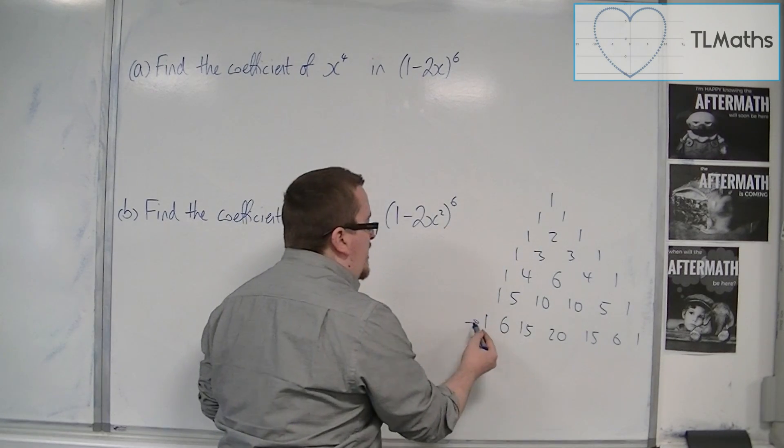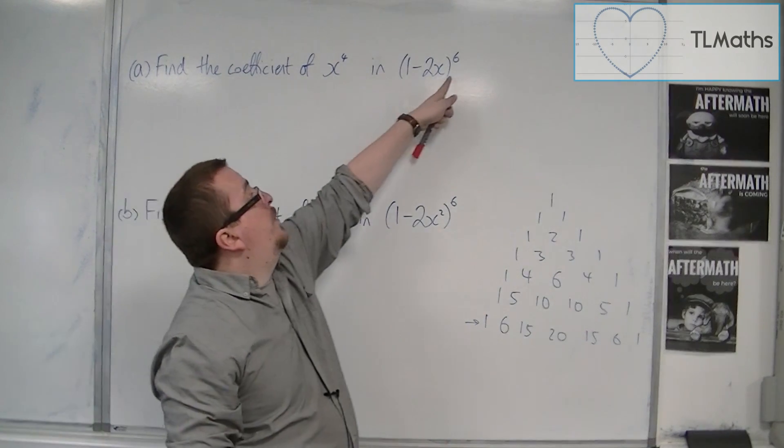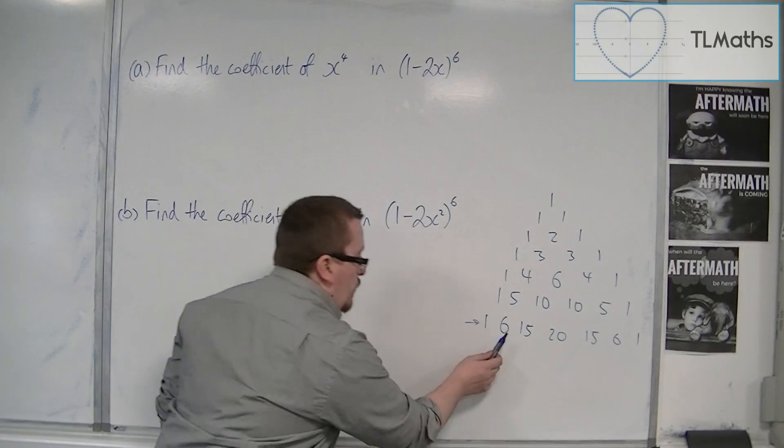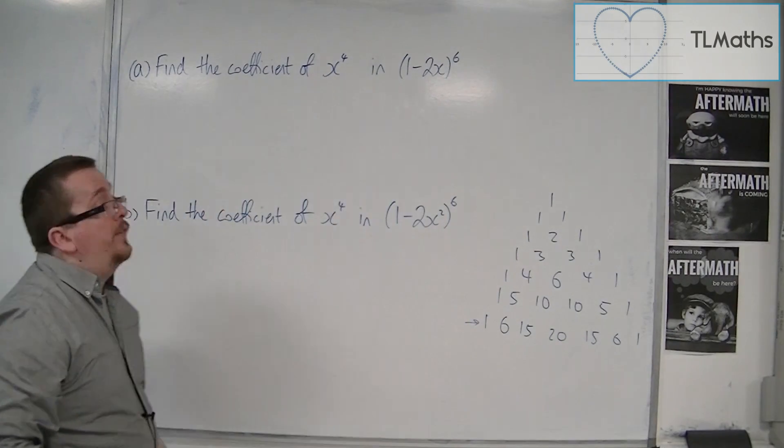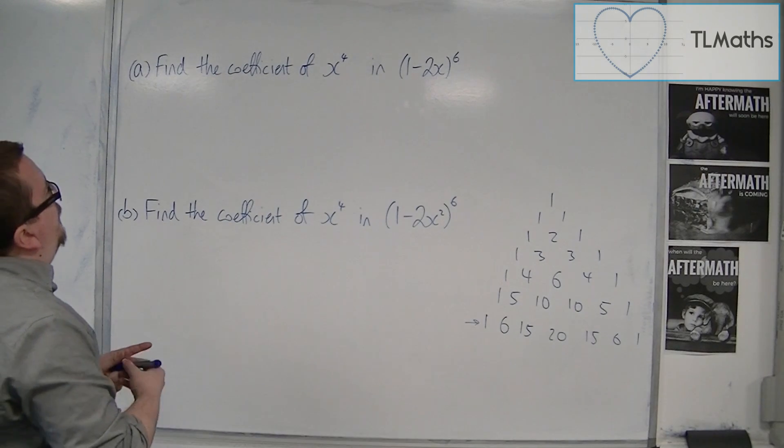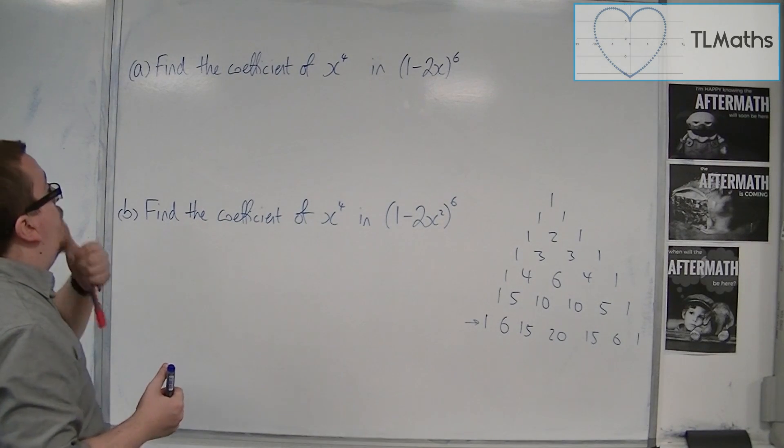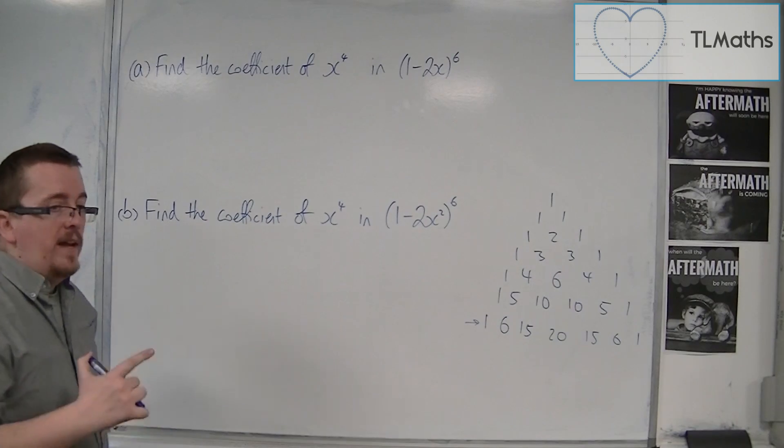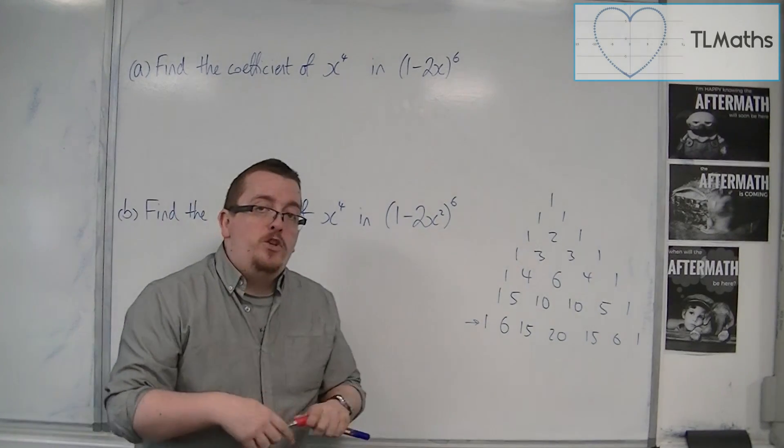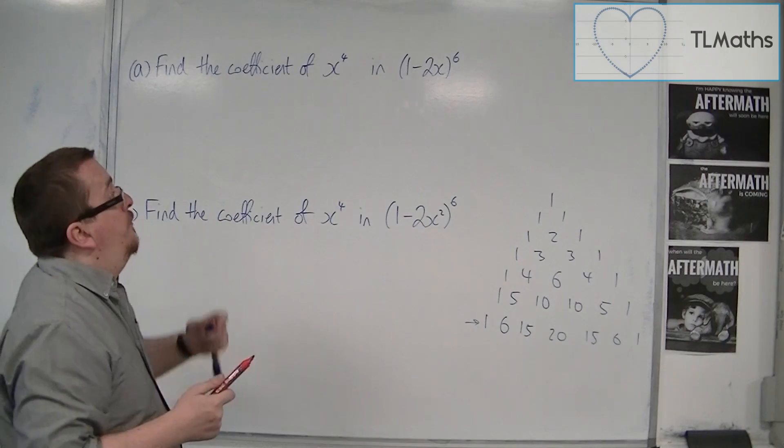And that's as far as I need to go because I just want it to the 6th row here. So when the second number in is a 6. So find the coefficient of x to the 4 in this expansion. Right, well, I need to determine which one would be the x to the 4.